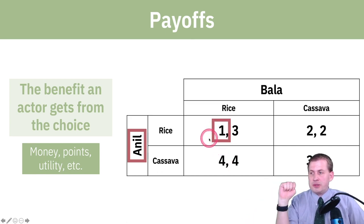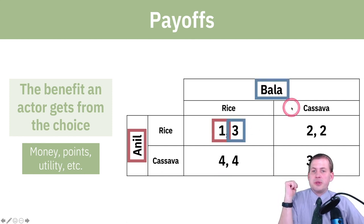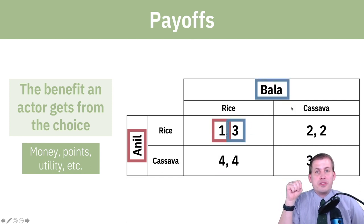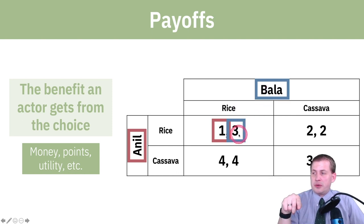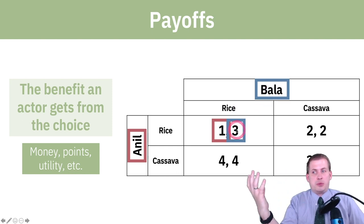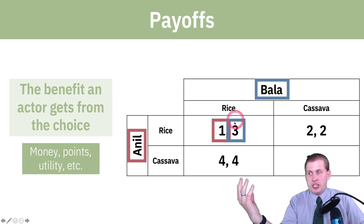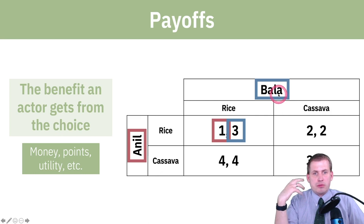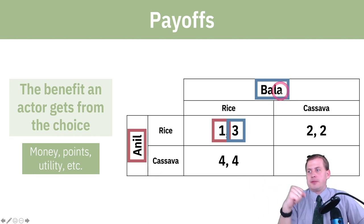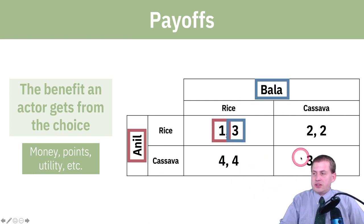The second number in each cell represents the payoff for the column person — so Bala, if he grows rice, he'll get three happiness points. He's good at growing rice, so he wants to be able to grow the rice. That's how you read these things: in each cell, the first number is the row player's payoff and the second number is the column player's payoff.